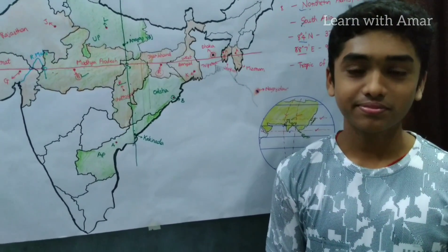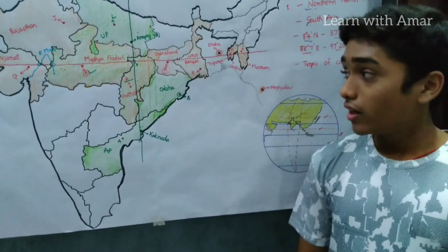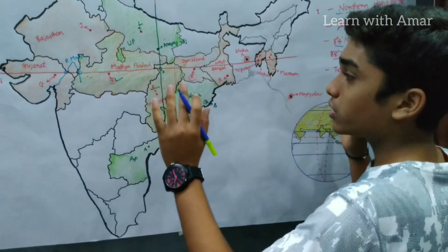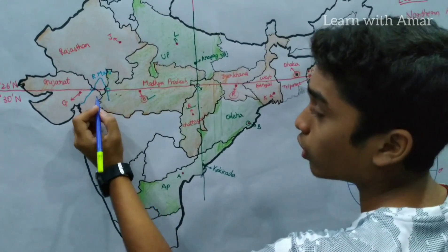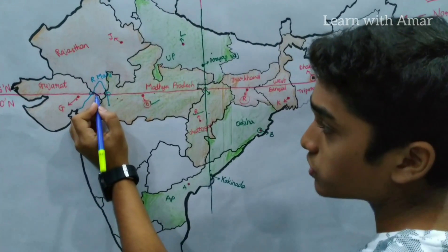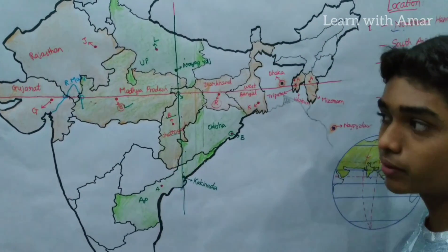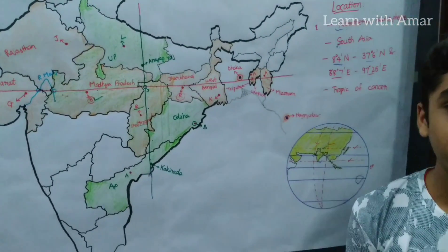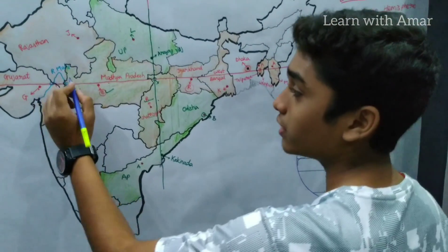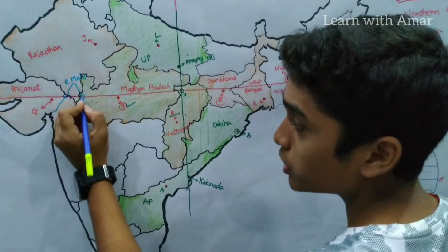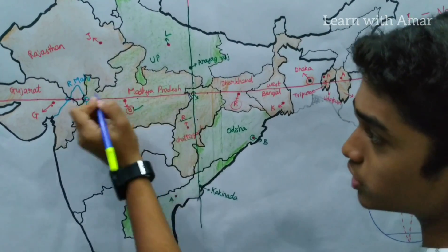Which state has the minimum length of Tropic of Cancer? Among these 8 states, the minimum length of the Tropic of Cancer is found in Rajasthan. Then what about maximum length? The maximum length is found in Madhya Pradesh.